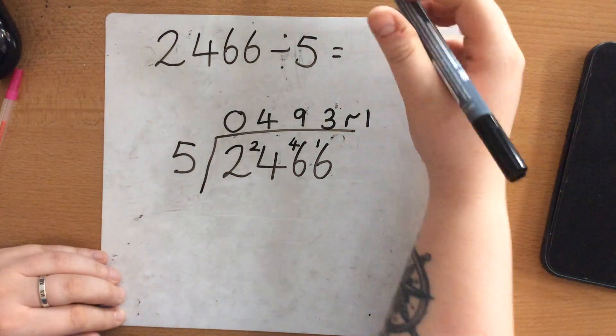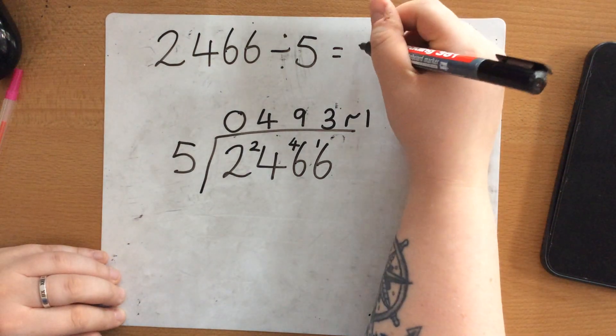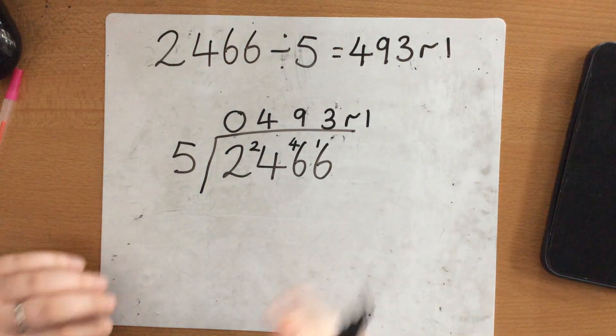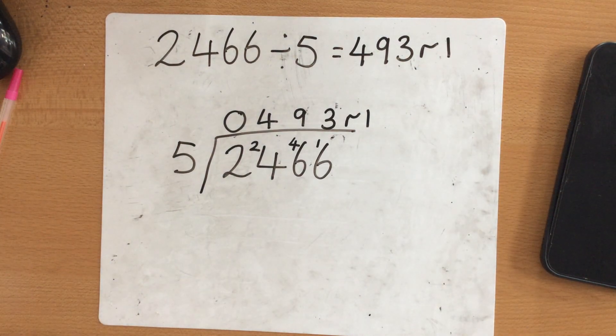So 2,466 divided by 5 is 493 remainder 1. Again I hope this was helpful for you year 5 and let me know if you need any help.